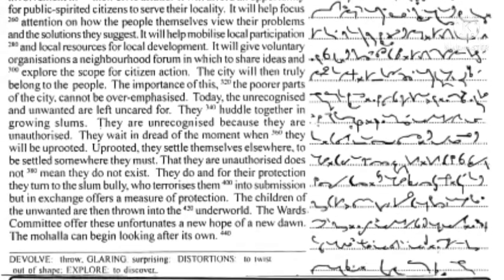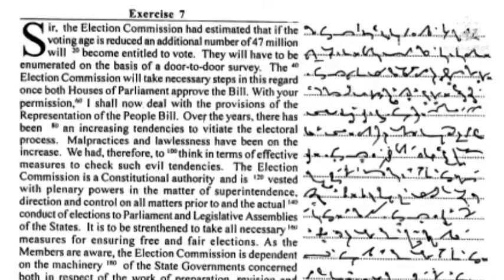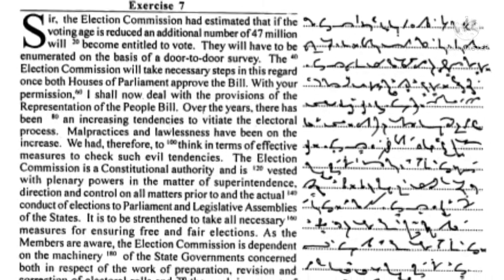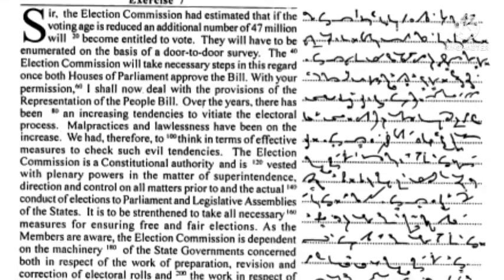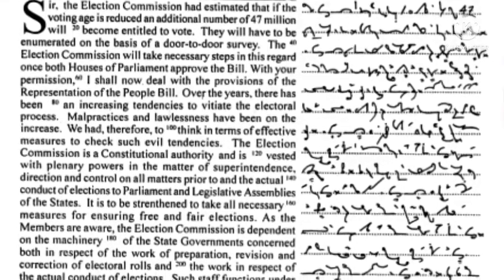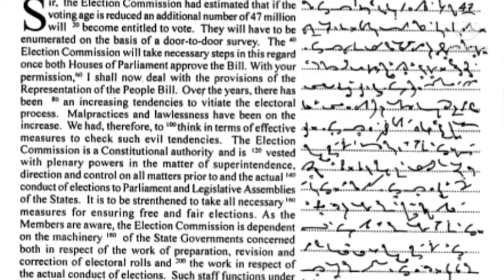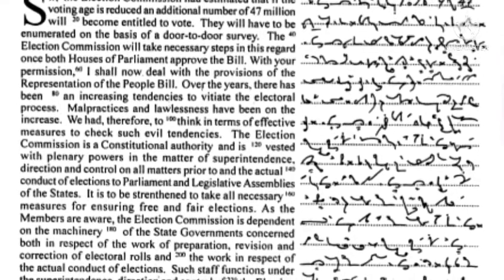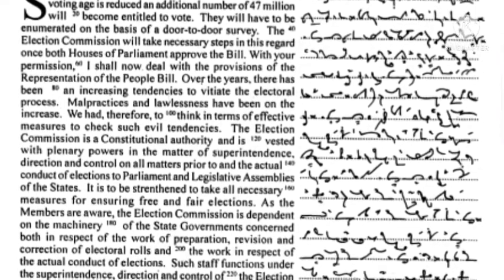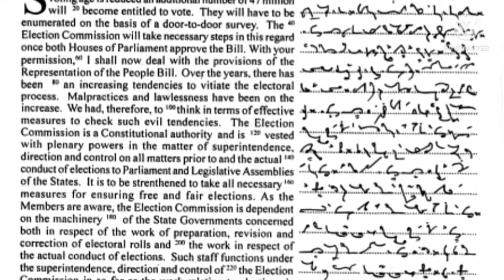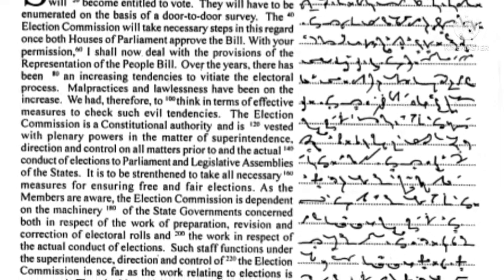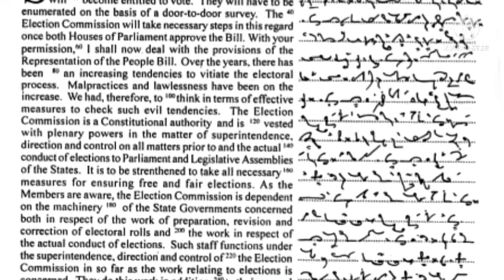The Election Commission has estimated that if the voting age is reduced, an additional 47 million people will become entitled to vote. They will have to be enumerated on the basis of a door-to-door survey. The Election Commission will take the necessary steps in this regard once both Houses of Parliament approve the bill.